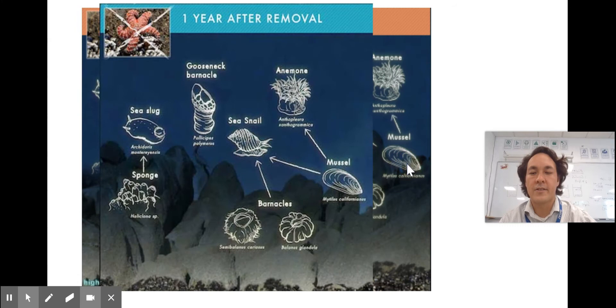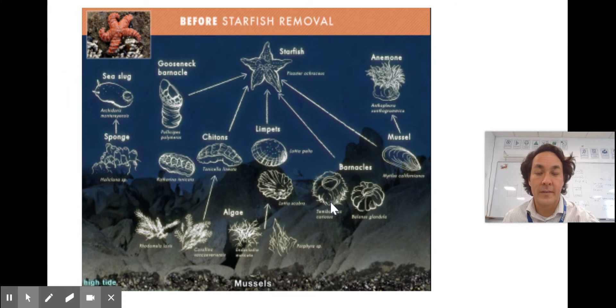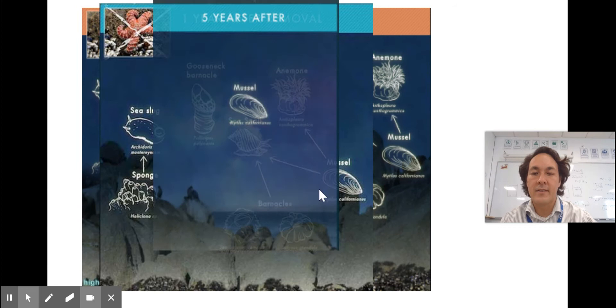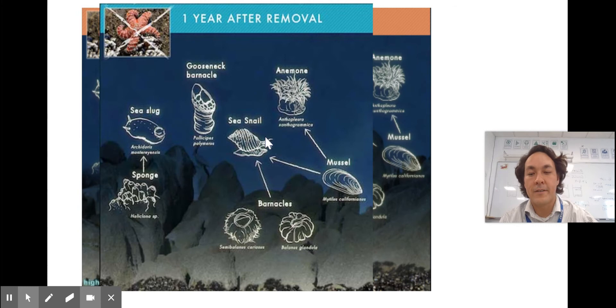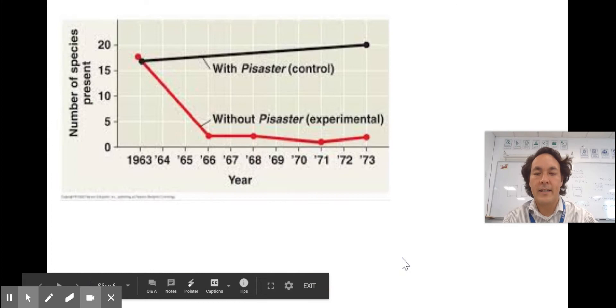What did he find? He found that the diversity went down. When he removed the starfish, you would think that if you get rid of the apex predator, everything else should flourish and do well. But it's not the case. When he got rid of the starfish after five years, it just became a monoculture, just mussels were left.